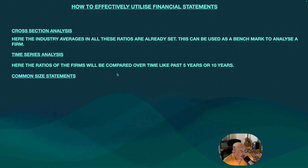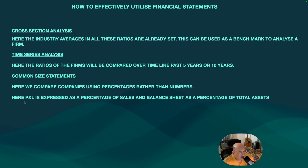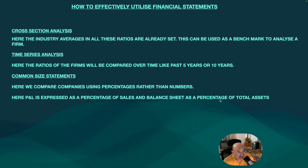Common size statement: here we compare companies using percentages rather than numbers, because numbers may deceive but percentages give a correct comparison. The profit and loss statement is expressed as a percentage of sales, and the balance sheet is expressed as a percentage of total assets.